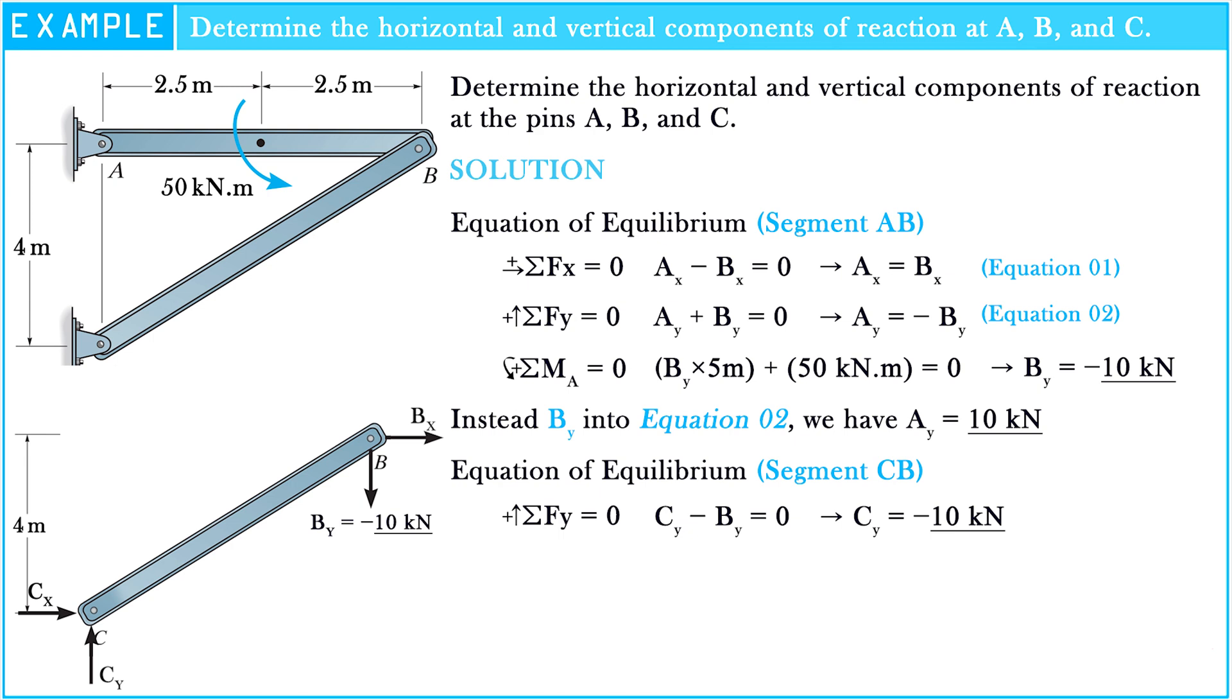Cy equals negative 10 kilonewtons. The sum of moments at point C equals zero. So negative 10 kilonewtons multiplied by 5 meters minus Bx multiplied by 4 meters equals zero.